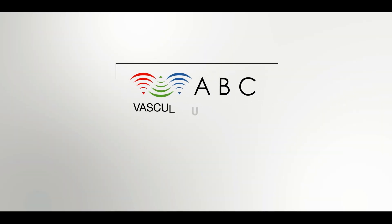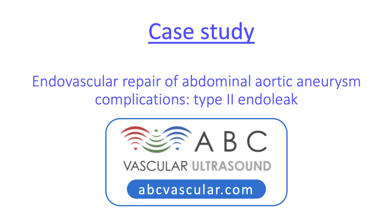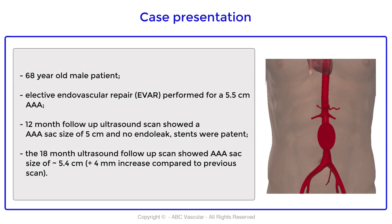Welcome to this ABC vascular ultrasound case study on endovascular repair of abdominal aortic aneurysm complications: type 2 endoleak. This is a case of a 60-year-old male patient who underwent an elective endovascular repair for a 5.5 cm abdominal aortic aneurysm.